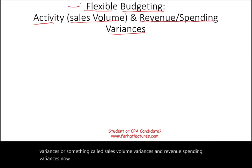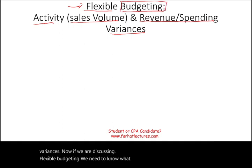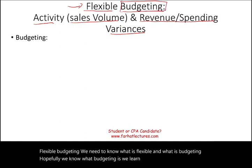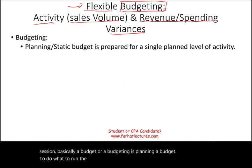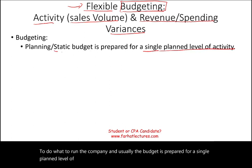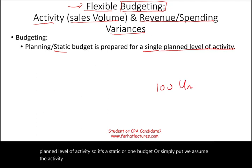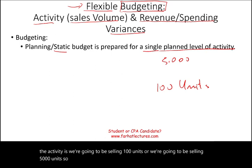If we are discussing flexible budgeting, we need to know what is flexible and what is budgeting. Budgeting is planning a budget to run the company. Usually, a budget is prepared for a single planned level of activity — so it's a static, or one-level budget. We assume the activity is, say, selling 100 units or 5,000 units: one single level of activity.